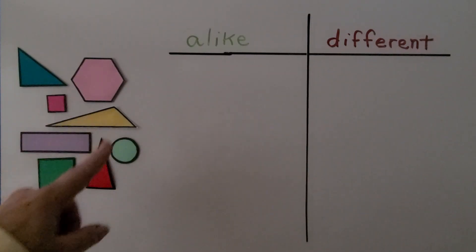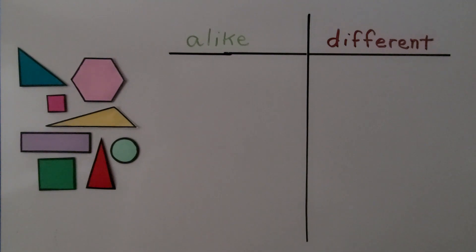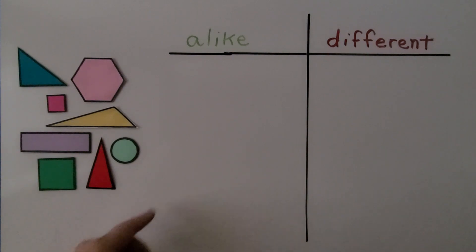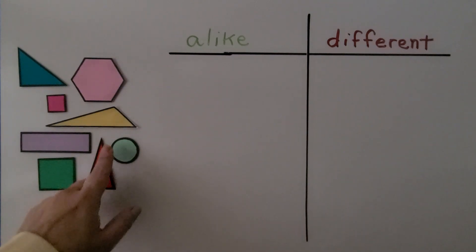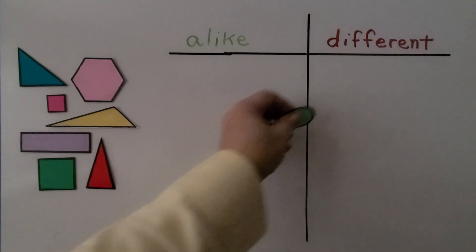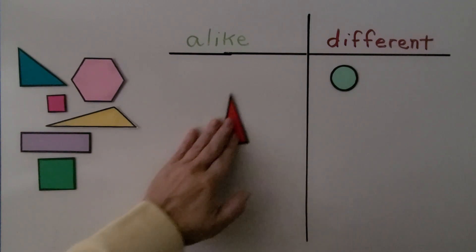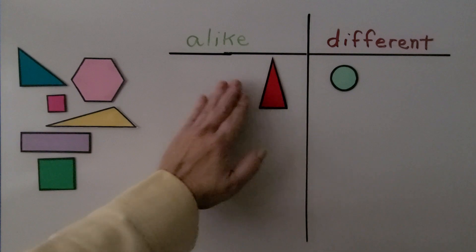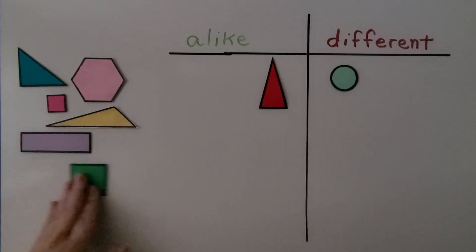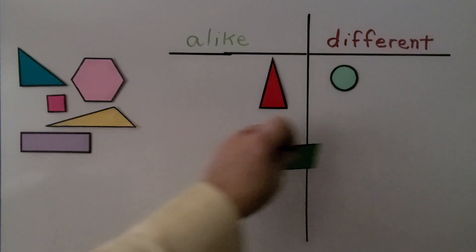Here we have some more shapes, and we can sort these shapes into sets of alike and different by the number of their sides. I'll choose three. We can put all the shapes with three sides into the 'alike' set. Here we have a circle — it doesn't have any sides, it has a curve, so that's not going to be like three sides. Here we have a rectangle — it has one, two, three sides, so we can put that in our 'alike' set. Here we have a square — it has four sides, so that's not like three sides and will be different.